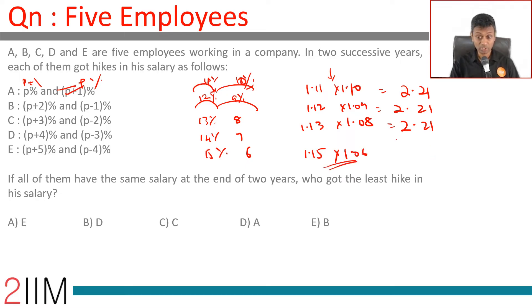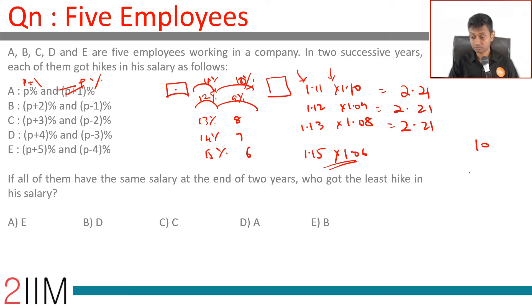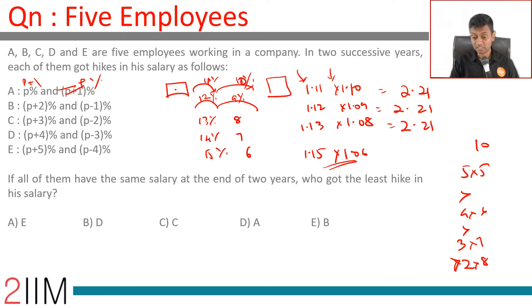If you start with the same number, you'll end with a larger number when the two factors are close. If the sum of two numbers is 10: 5×5 is greater than 4×6, greater than 3×7, greater than 2×8, greater than 1×9. When the sum is the same, the closer the numbers, the higher the product.